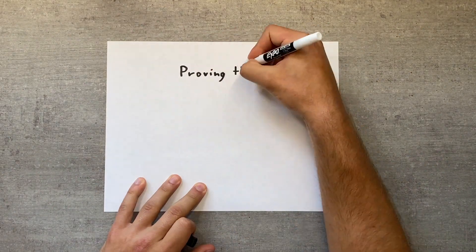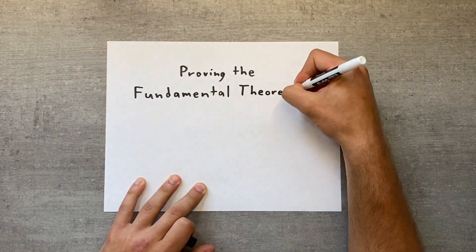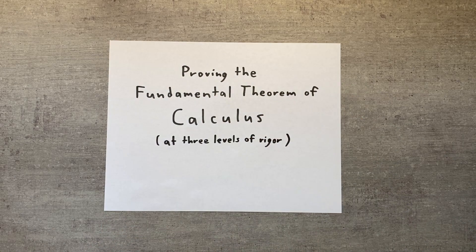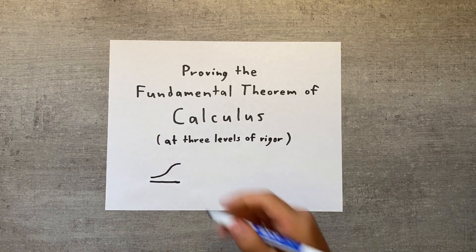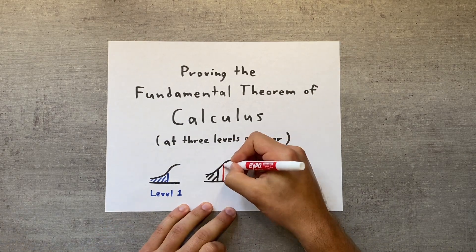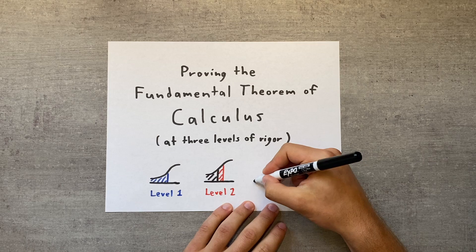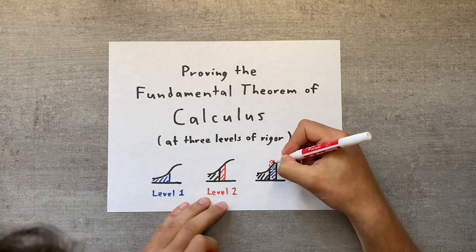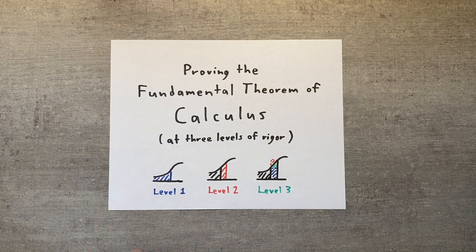Hi everyone! In this video, we're going to prove the fundamental theorem of calculus at three different levels of rigor. We'll discover the underlying intuition for why integrals and derivatives are opposites, as well as how that intuition relates to the rigorous proof of the theorem. As an added bonus, we'll learn about the importance of both formality and informality in understanding proofs. Let's get started!